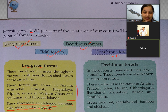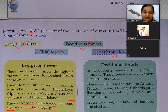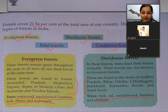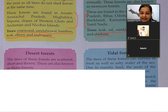Trees found in deciduous forests include teak, sal, sandalwood, bamboo and shisham.